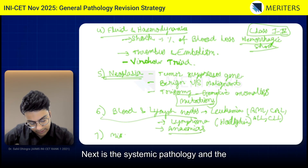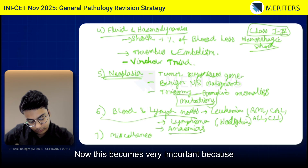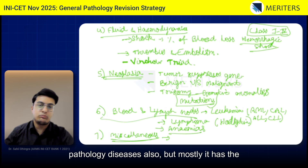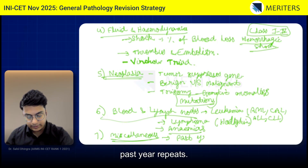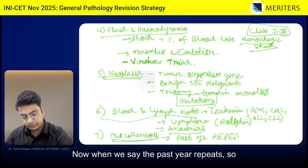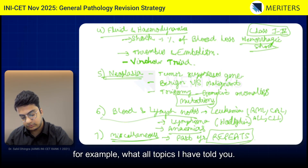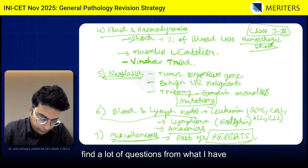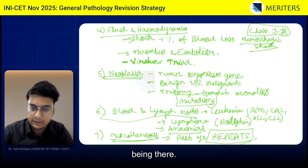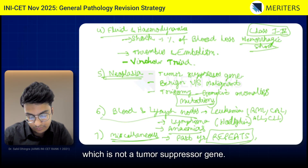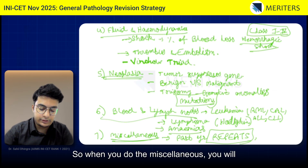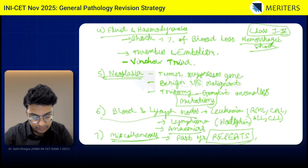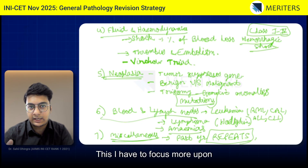Next is Systemic Pathology and Miscellaneous. This is very important because it covers some systemic pathology diseases but mostly contains past year repeats. When you open the miscellaneous section, you will find many questions from the topics I have already mentioned — for example, which is not a tumor suppressor gene. Doing the miscellaneous will show you the trend in past INICT and AIIMS papers, so you understand what is important and what to focus on more.